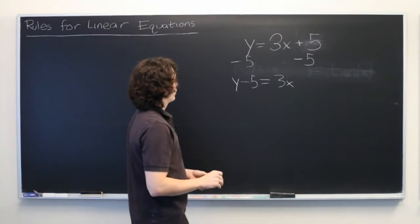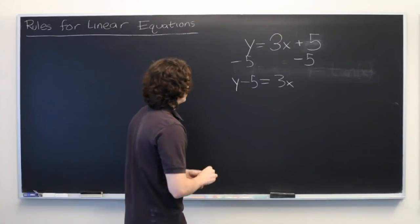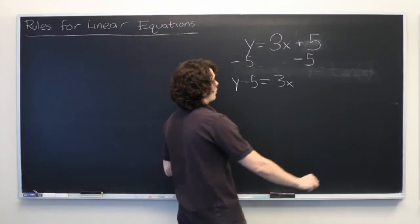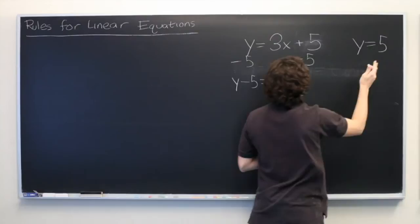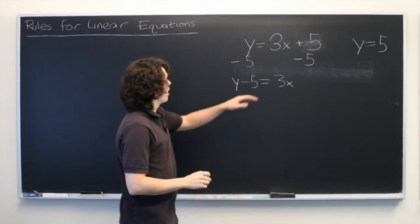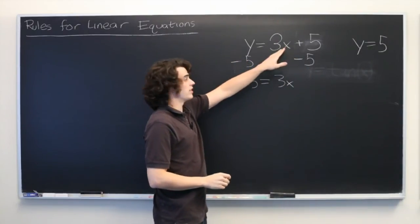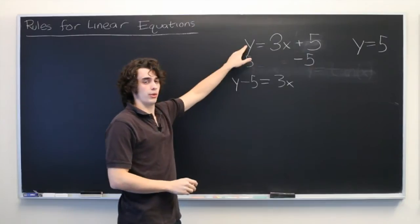Second rule of linear equations is that unless you have a constant linear equation, such as y equals 5, every input value will have exactly one output value associated with it and vice versa.